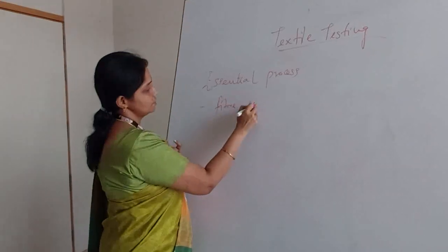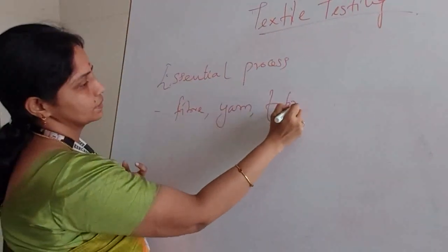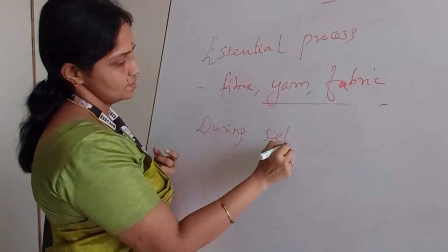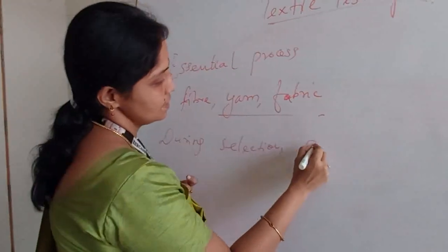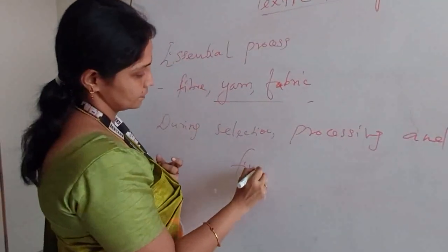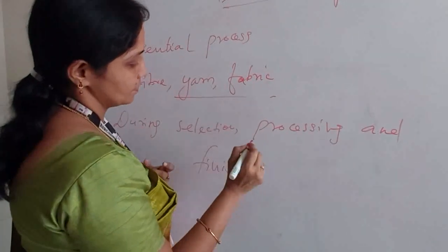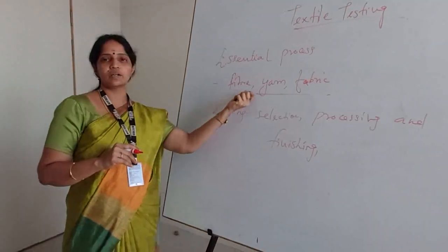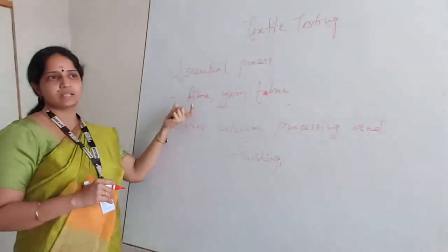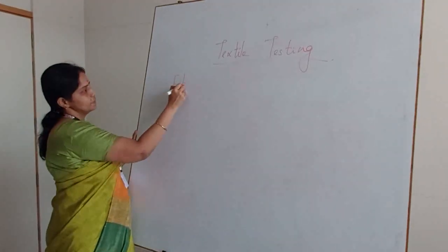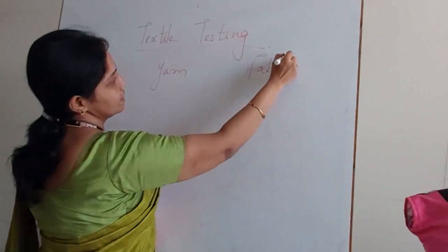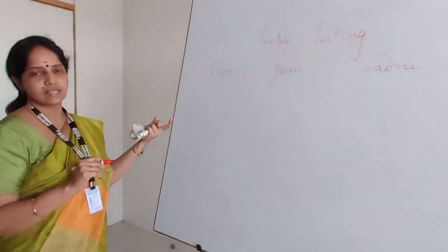The three main segments in textile are fiber, yarn, and fabric. So during selection, processing, and finishing, before we are going to select any fiber, yarn, or fabric, this is the first step. We have to test what are the properties that particular fiber contains. The first step is fiber, second is yarn, and third is fabric. These are the three main segments in textile.